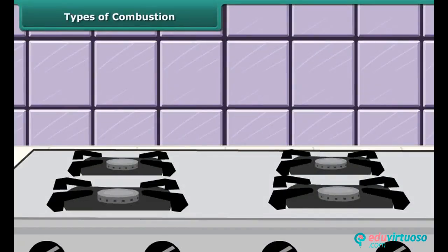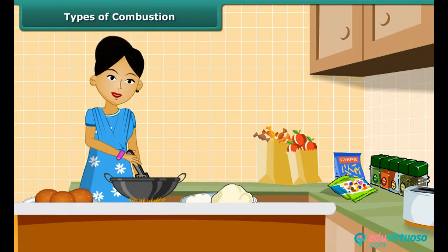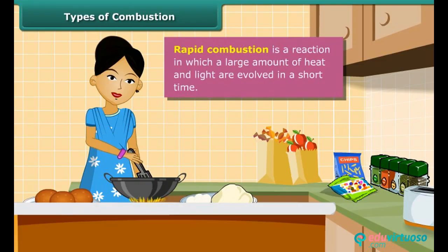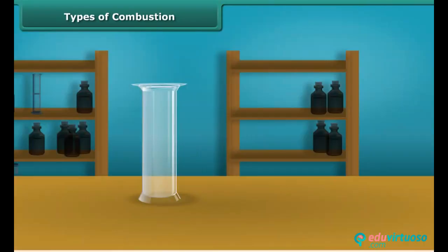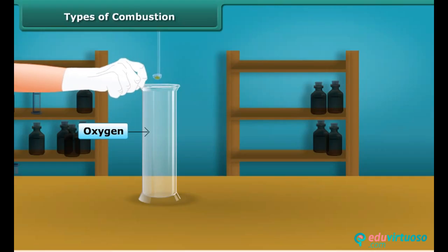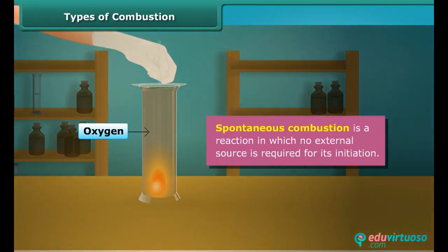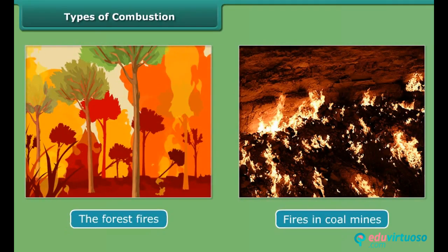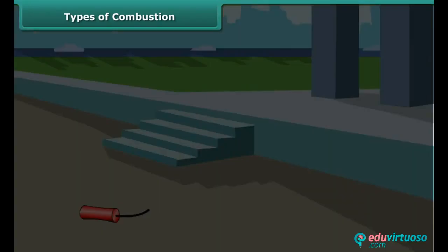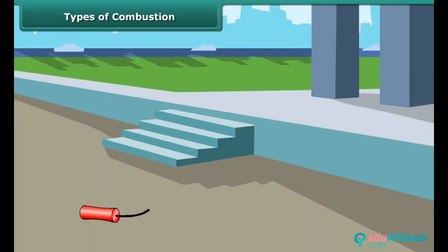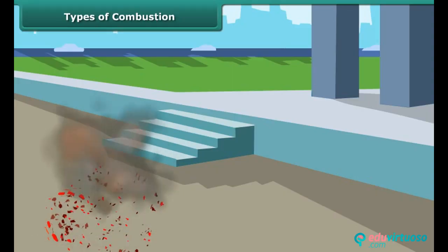Let us now look at types of combustion. A lady igniting LPG in a kitchen to make food is an example — LPG burns quickly producing a lot of heat. This type of combustion is called rapid combustion. When white phosphorus is left in the open for some time, it catches fire on its own. This is called spontaneous combustion; other examples include forest fires and fires in coal mines. The burning of a cracker produces a large amount of heat, light and sound — this type of combustion is called explosion.